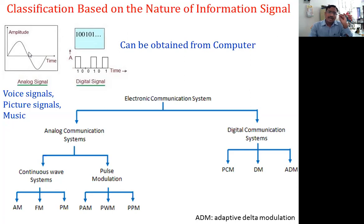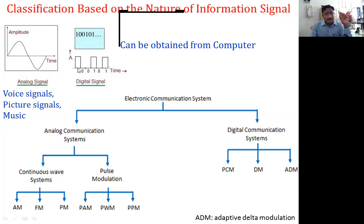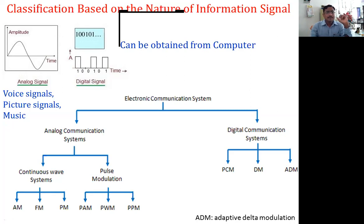The signal whose amplitude varies continuously with time is called an analog signal. Whereas for a digital signal, the amplitude varies in a discrete manner. For example, we have a high amplitude, then a low amplitude, then low again, then high again. During a digital signal, the amplitude becomes high, then low — it remains low for a certain time, then becomes high again.